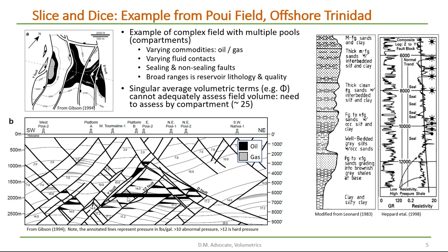Some of the compartments are oil, some of them are gas, or some have oil and a gas cap. We see that there are a broad range of commodities here, oil and gas. We also see that there are different fluid contacts in the field, varying by compartment. And some of the faults appear to be sealing, and some of them appear to be non-sealing. Also, if we look at the stratigraphic section here, we can see that there's a broad range in the reservoir quality, with well-sorted sands to poorly sorted sands near the top. So no singular volumetric term, for example porosity, can adequately assess the field. In this case, we'll have to dice this thing into approximately 25 compartments.